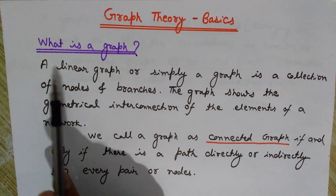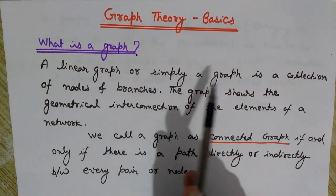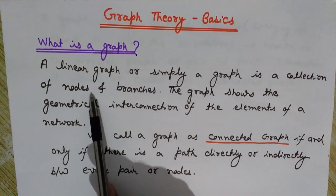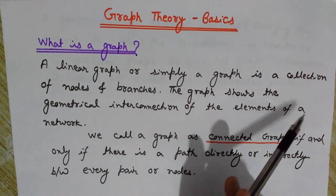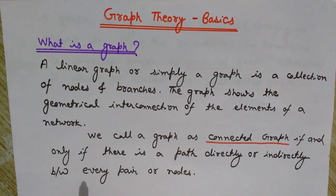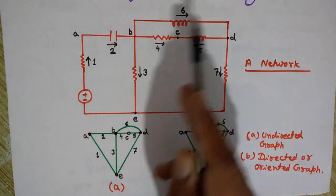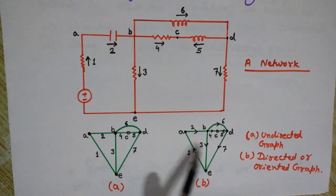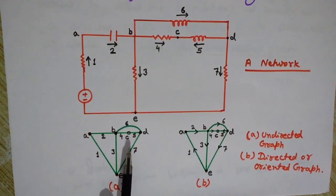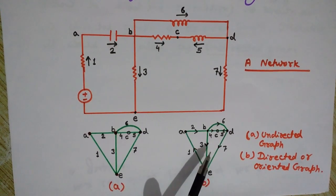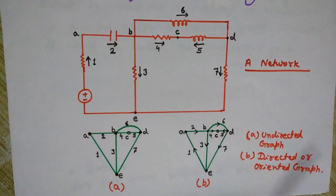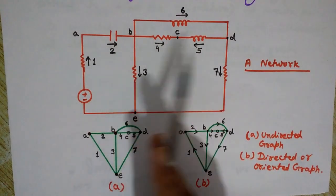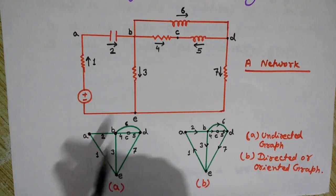So what is a graph? A linear graph, or simply a graph, is a collection of nodes and branches. The graph shows the geometrical interconnection of the elements of a network. This is a network and these are the two graphs — this is the undirected graph and this one is the directed or oriented graph. We will see all these terms and later I will explain all the concepts of this network and the graphs.